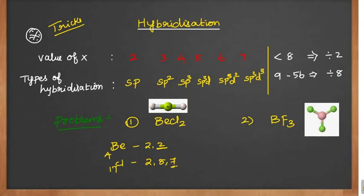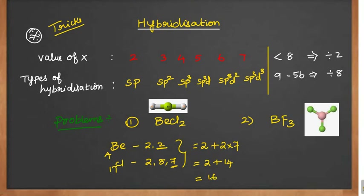There are 2 chlorine atoms. So we calculate: 2 plus 2 into 7, giving us 2 plus 14 = 16. Since the value is between 9 to 56, we divide by 8, and we get the value 2. So if the value is 2, then x is sp hybridization.